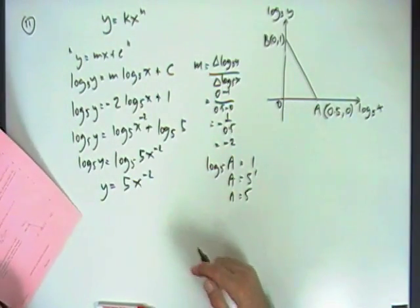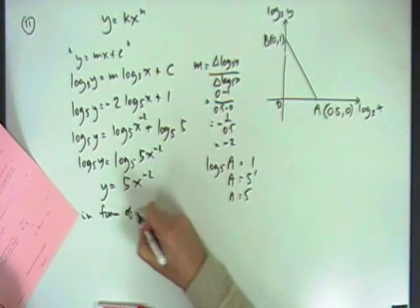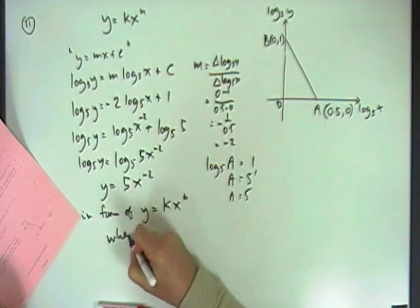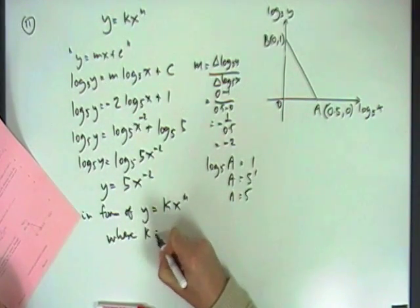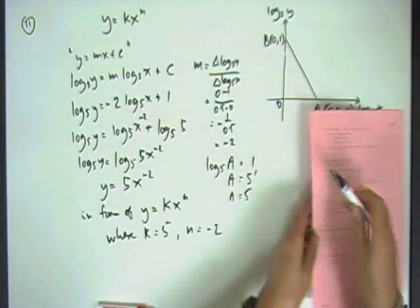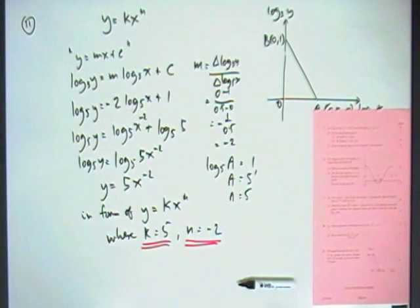It says, find the values of k and n. So I'll have to put this down. So that's in the form of y equals kx to the n, and this is the part that answers the question, where k equals 5 and n equals negative 2. And that would be it.